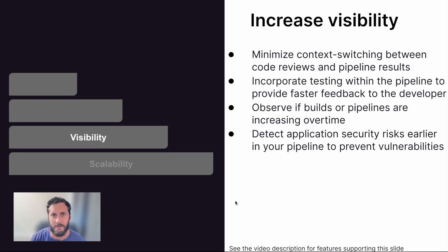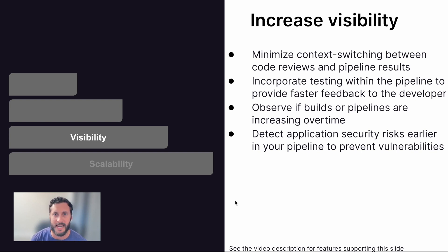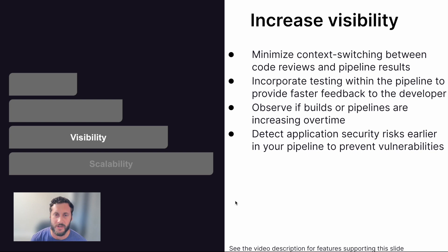How does GitLab solve for visibility? As GitLab is a single platform and a single pane, the experience between code reviews through automating your CICD pipelines is seamless. Your engineer will be able to see what was committed and how it failed from one single view without jumping between different applications. Even your QA teams can incorporate unit and integration testing within the pipeline to provide faster feedback and identify quality degradation before production.